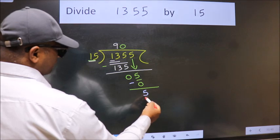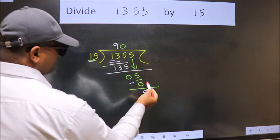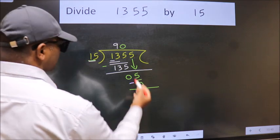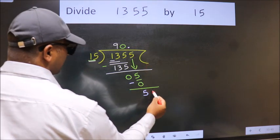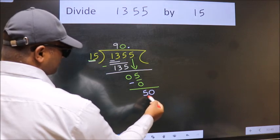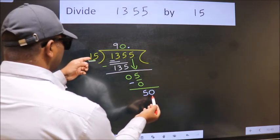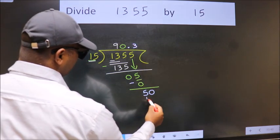Over here, we did not bring any number down, and 5 is smaller than 15, so now we can put dot and take 0. So 50. A number close to 50 in the 15 table is 15 threes, 45.